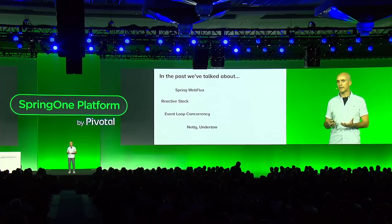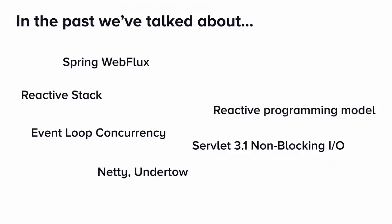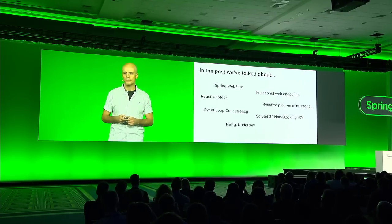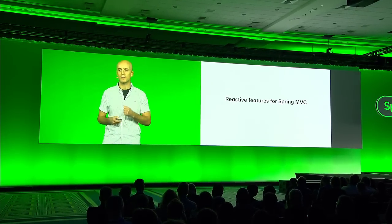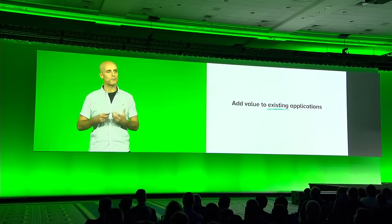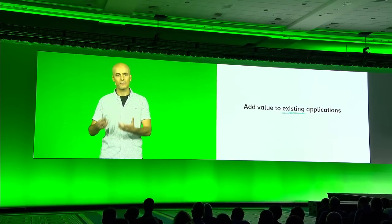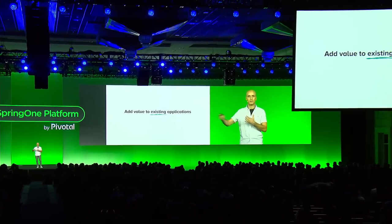We've talked about groundbreaking things like running on non-Servlet containers, asynchronous runtimes like Netty and Undertow. Or if you'd like to stay on a Servlet container, you can use Tomcat or Jetty with Servlet 3.1 non-blocking I/O. We've also talked about reactive programming models and even a functional programming model for web endpoints. But what we haven't talked about as much is reactive features in Spring MVC, which is what most of you are using today — how can we add value to existing applications and get some immediate benefits without the risk of going directly to a full reactive stack?